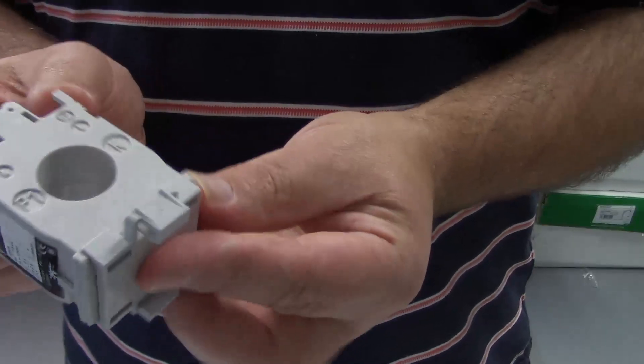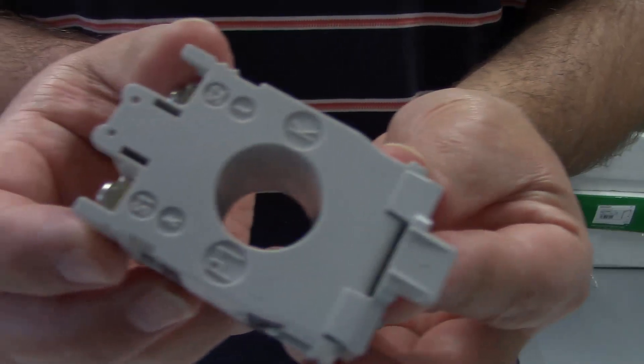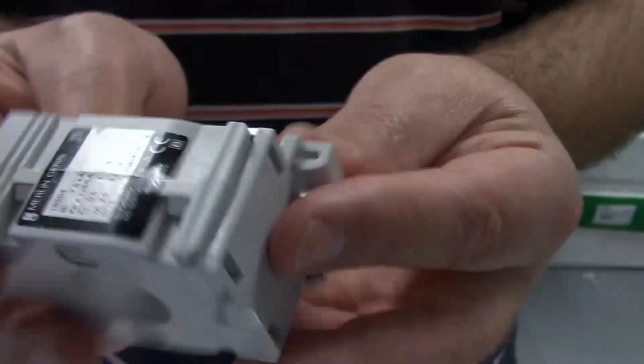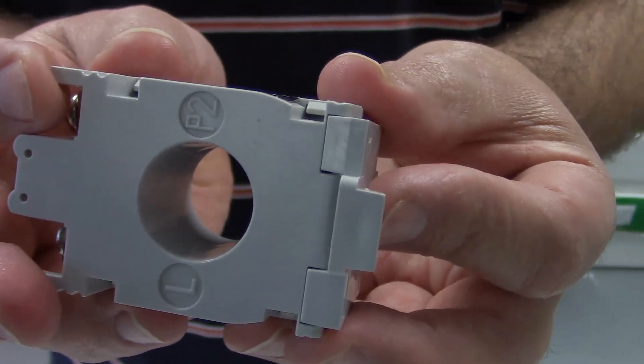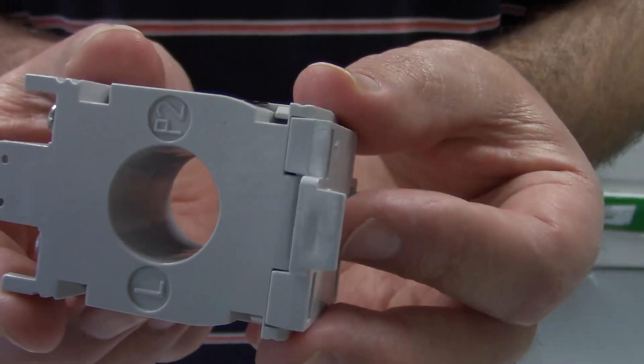If you look at this side, you can see that it says P1 on one side and P2 on the other side. The direction of flow needs to be from the supply.